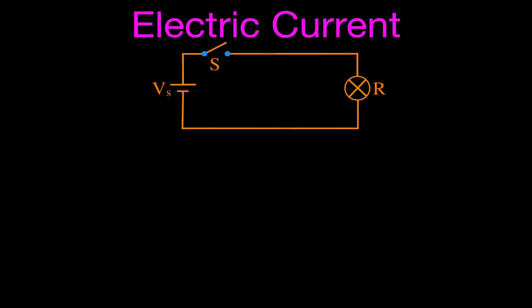Here is what we mean by electric current. Here we have a simple circuit. We have a voltage supply, like a battery, for example. We have a switch — the switch is open — and we have a resistor here, which is a light bulb. Because the switch is open, we have an open circuit, and the light bulb is not lit because there is no current, no continuous path.